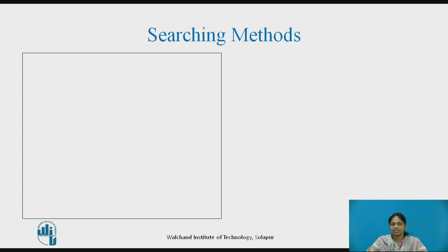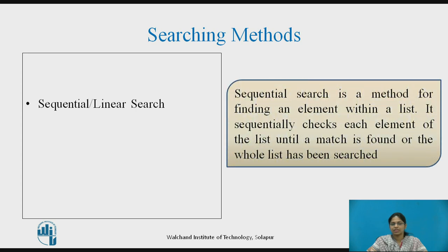Let us see what the searching methods are. Sequential search, or linear search, is a method for finding an element within a list. It sequentially checks each element of the list until a match is found or the whole list has been searched.